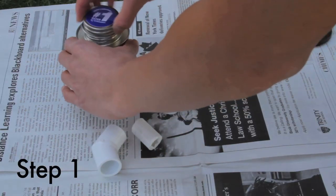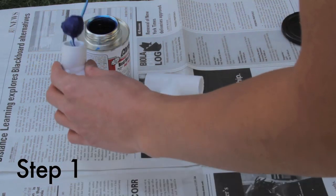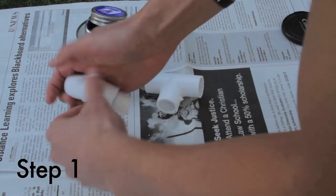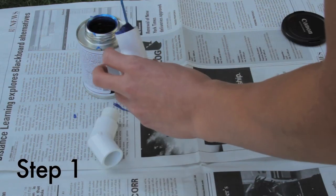Now that we've got our parts, let's start building. Glue one elbow to one of the tees by using a 1.5-inch piece. You'll do this four times.